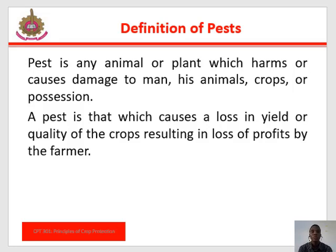Definition of pest: A pest is any animal or plant which harms or causes damage to man, his animals, crops, or possessions. A pest is that which causes losses in yield or quality of the crop, resulting in loss of profits by the farmer. When a loss in yield reaches a certain proportion, the pest can be defined as an economic pest.